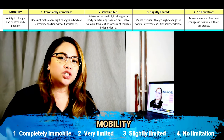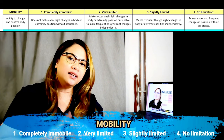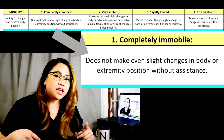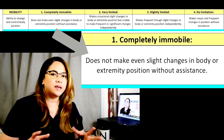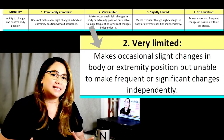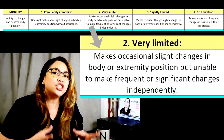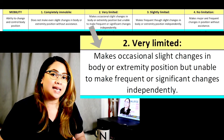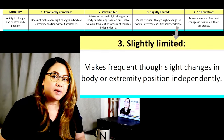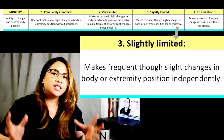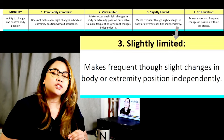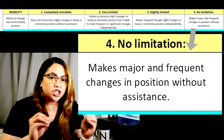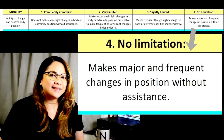Mobility is the ability of the patient to change and control body position. Rate one, completely immobile: the patient does not make even slight changes in body or extremity position without assistance. Rate two, very limited: the patient is still able to make occasional slight changes in body or extremity positioning but is unable to make frequent or significant changes independently. Rate three, slightly limited: the patient makes frequent though slight changes in body or extremity position independently. Rate four, no limitation: the patient makes major and frequent changes in position without difficulty.